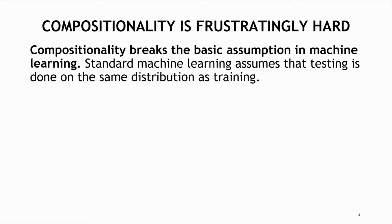Recognizing new combinations is an easy task for people, but it is frustratingly hard for machine learning models. This basically happens because compositionality breaks the basic assumption in machine learning - that test data comes from the same distribution as the training data.